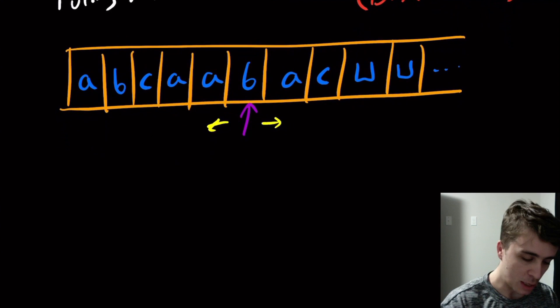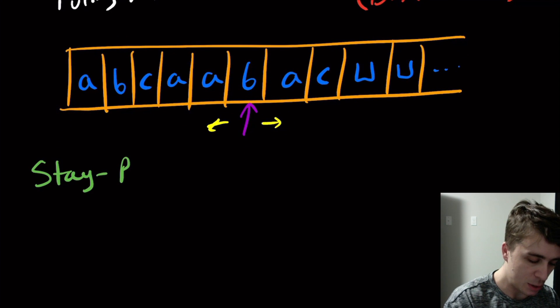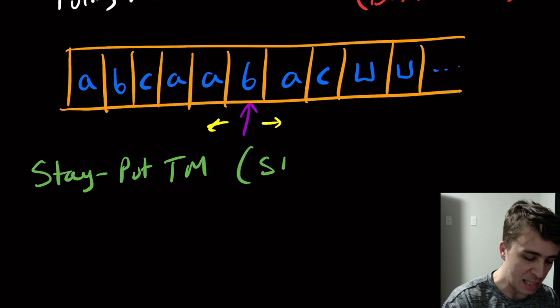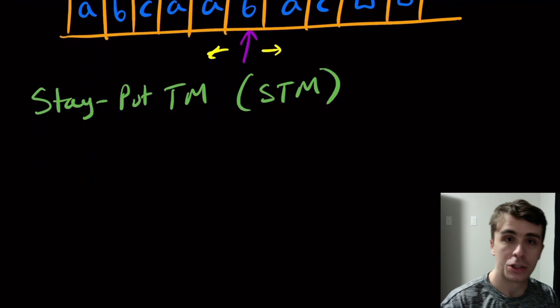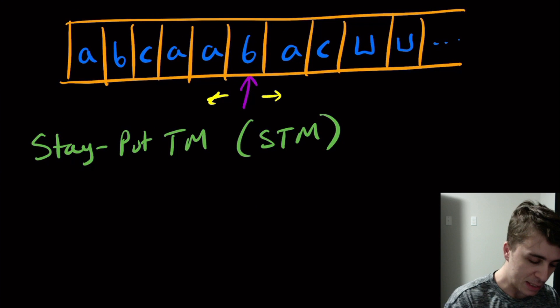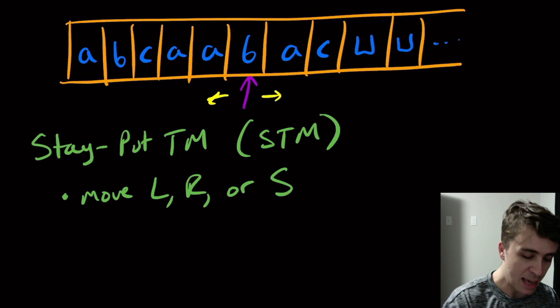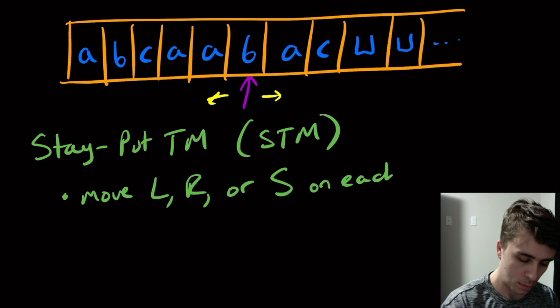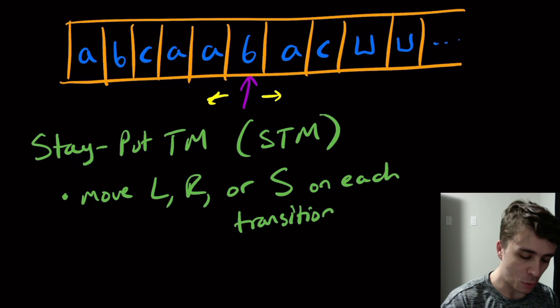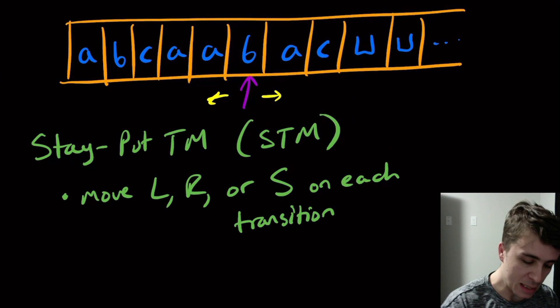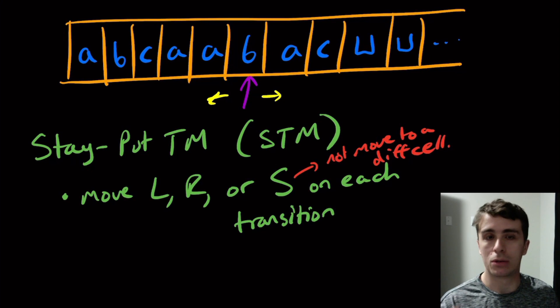So the one variant I want to talk about today is something called a stay put Turing machine which I'm going to call an STM. The behavior of this thing is that we can move left, right, or S on each transition. So what does the S here stand for? It means stay put. And the behavior is that it will not move to a different cell. So instead of being forced to move one cell to the right or to the left, here we're allowing ourselves to stay put.